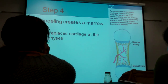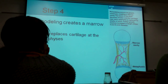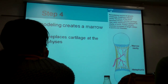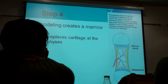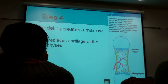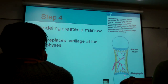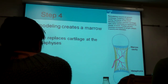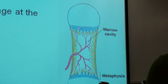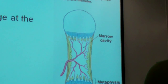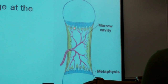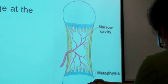Step four is the formation of the marrow cavity. The cartilage at the ends — we can see bone starting to grow at the metaphysis, which is what we call the place where the diaphysis and the epiphysis meet. So step four is creating the marrow cavity and having the bone actually start growing here at this boundary.